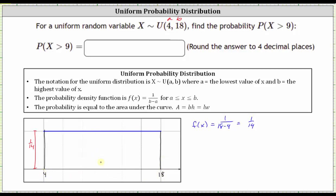Which should make sense because we know the total area under the probability density function over the interval from four to 18 must equal one, and notice base times height, or 14 times 1/14 is one.